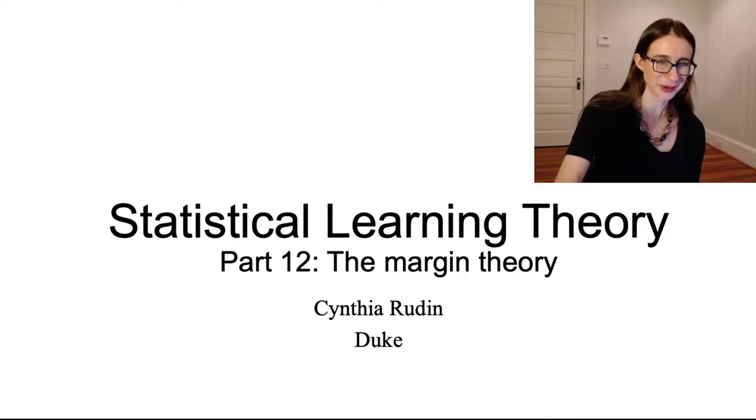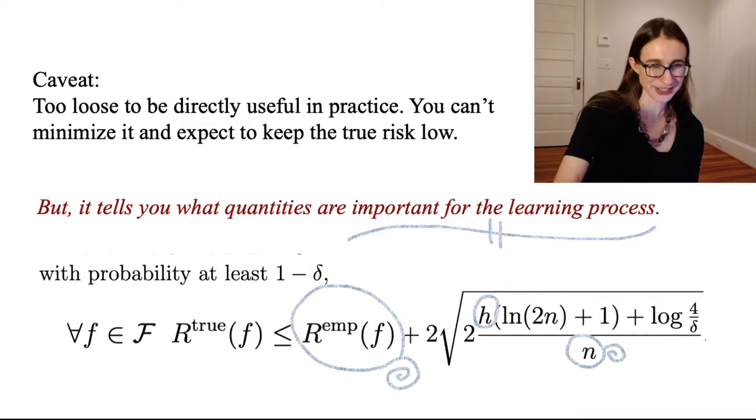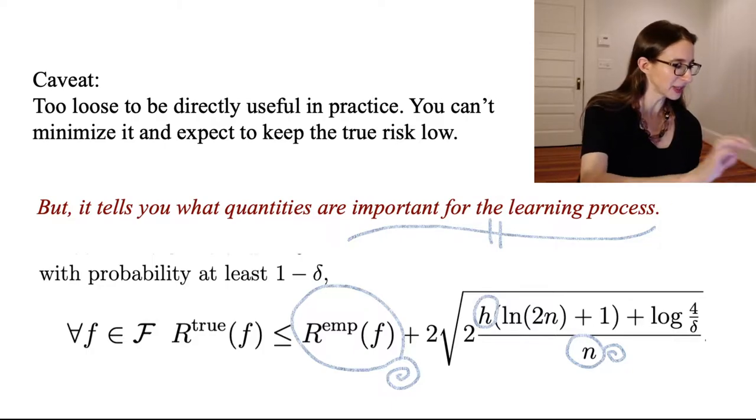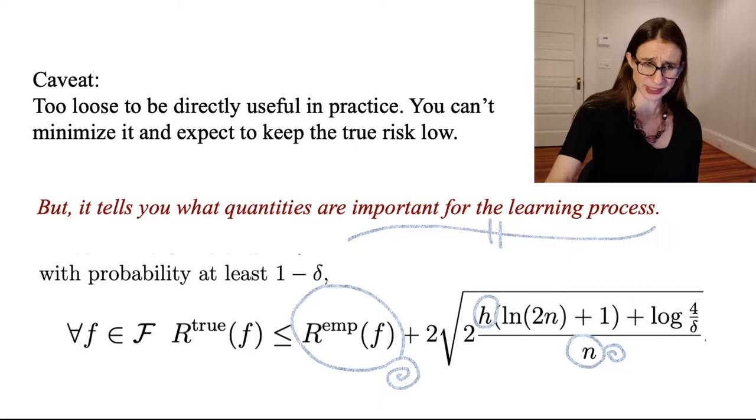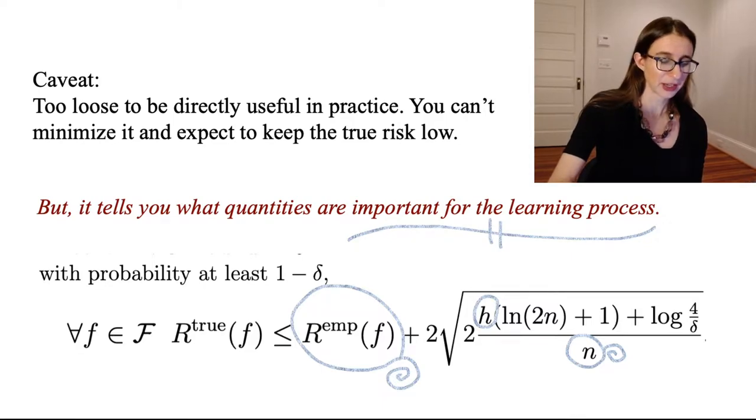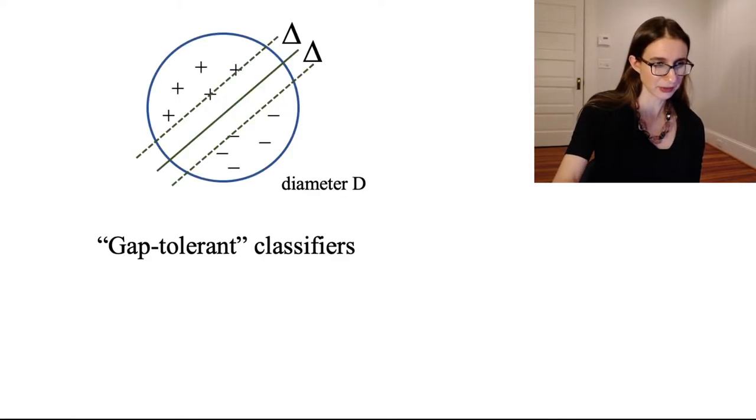We have finally arrived at the margin theory. All that to get back to margins. Now, as I mentioned earlier, VC dimension is great. You can calculate it sometimes. But Vapnik wanted something more direct than the VC dimension, and what he wanted is margins. So the question is, how is he going to get the margin into this bound? That's where the math gets quite a bit tricky.